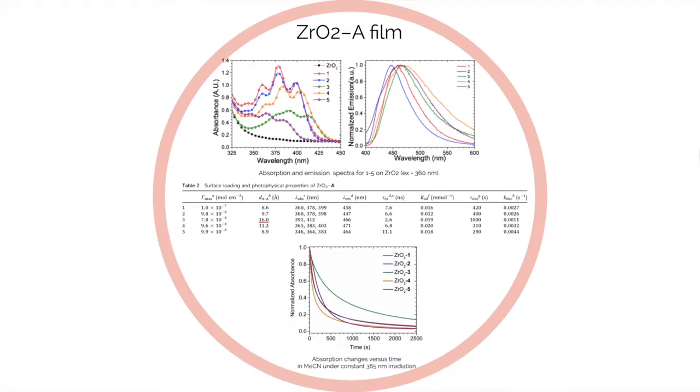We then studied the photostability of acceptor monolayers by monitoring change in absorption spectra of the film under continuous 365 nm irradiation. As we can see, of the films, 4 and 5 were the least stable ones, while 1 and 2 are slightly more stable. Interestingly, 3 monolayer was the most stable of the series, which may be due to the steric hindrance or a change in reactivity at the 9-10 position due to the phosphonate groups.